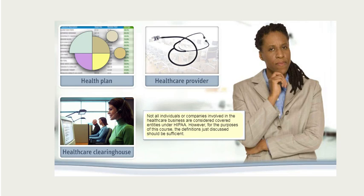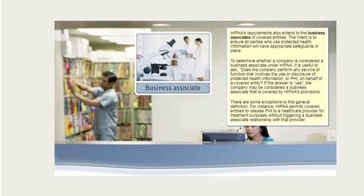Not all individuals or companies involved in the health care business are considered covered entities under HIPAA. HIPAA's requirements also extend to the business associates of covered entities, with the intent to ensure all parties who use protected health information have appropriate safeguards in place. To determine whether a company is considered a business associate, ask: does the company perform any service or function that involves the use or disclosure of PHI on behalf of a covered entity? If yes, the company may be considered a business associate. Note that HIPAA permits covered entities to release PHI to a health care provider for treatment purposes without triggering a business associate relationship.